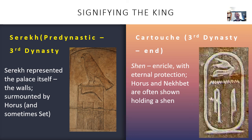That has been our look at the Egyptian royal titulary — the ways in which divinity is associated with the king and the power of names in ancient Egypt. Think about your own name; maybe you want to take a throne name or a two ladies name. See you next time.